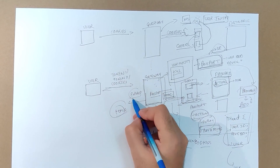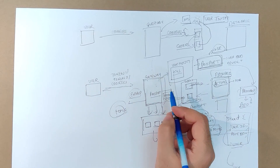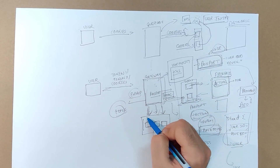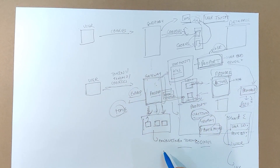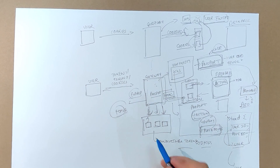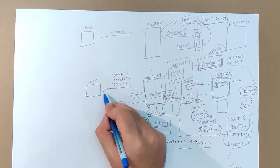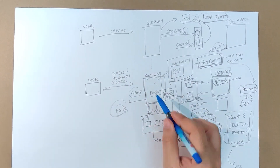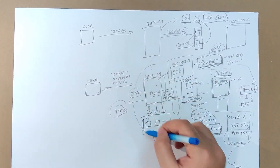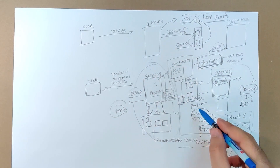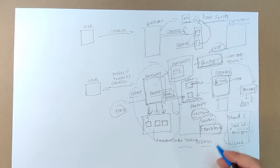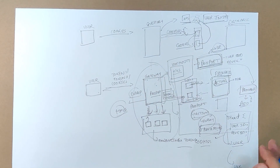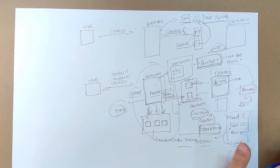If the cookies are expired, the gateway makes a call to the token management service to regenerate a cookie for that user and sends the new cookie back. So everything related to tokens is handled here, and the main logic stays in the backend. This is how login works.